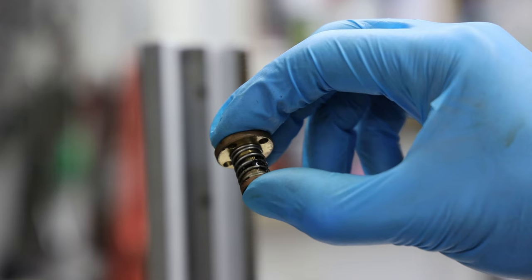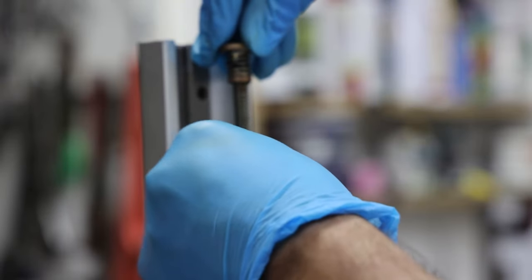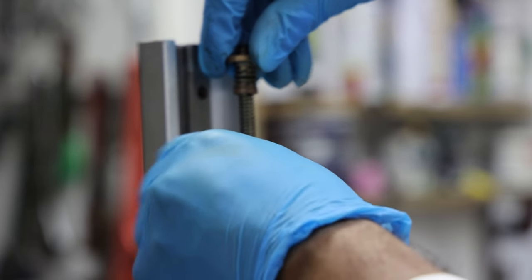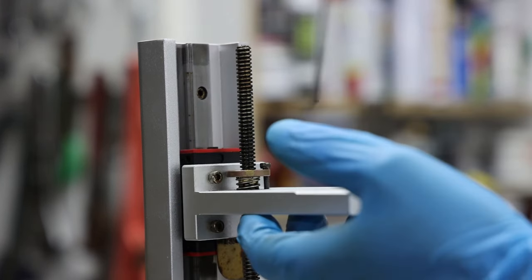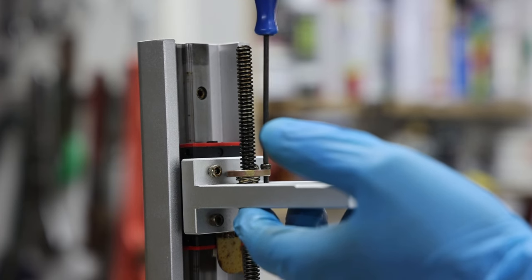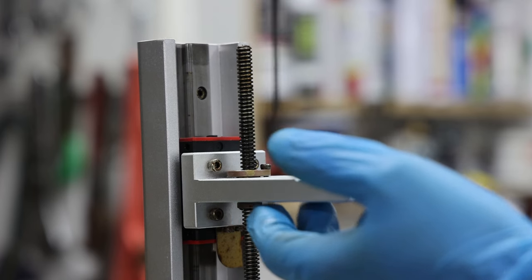This is the anti-backlash nut. It needs to be compressed when you fit it back onto the screw otherwise it won't perform its function, so you need to keep it compressed as you're putting it onto the lead screw. I put one screw in just to roughly align. You'll see I don't fully tighten the screw until I've got the rest in.